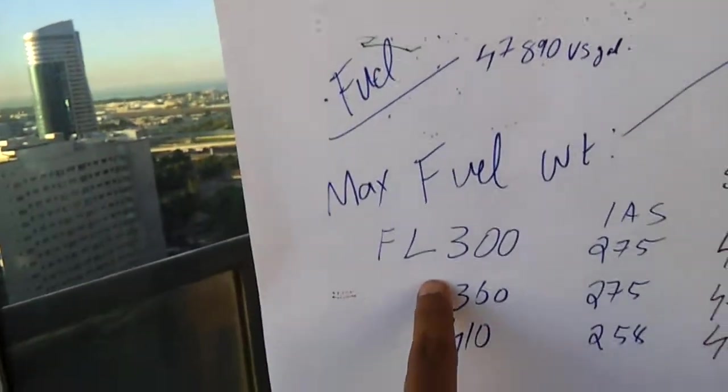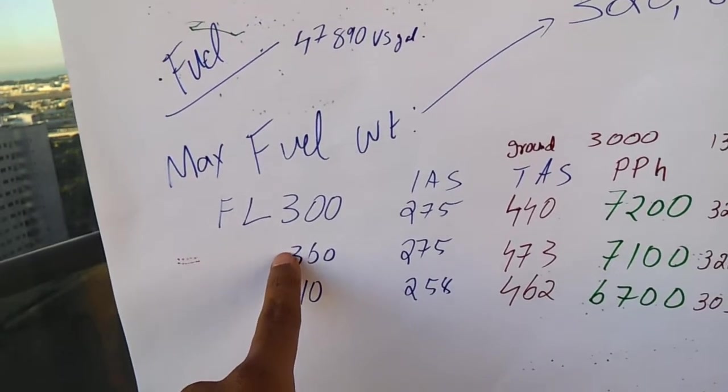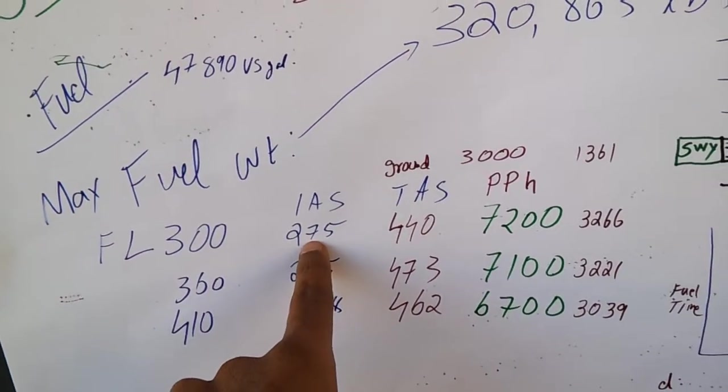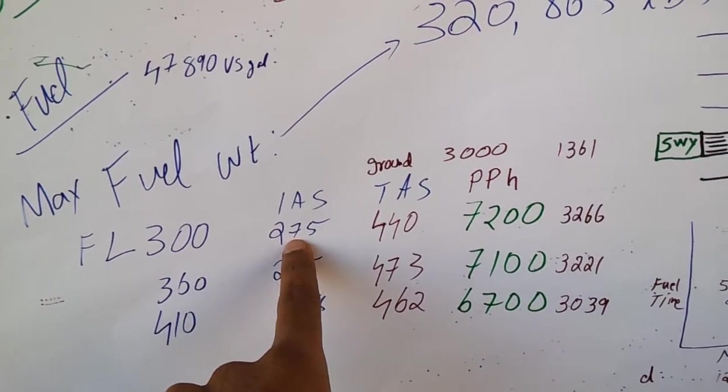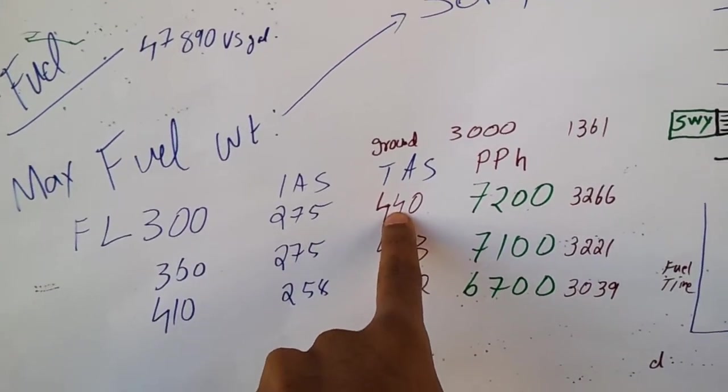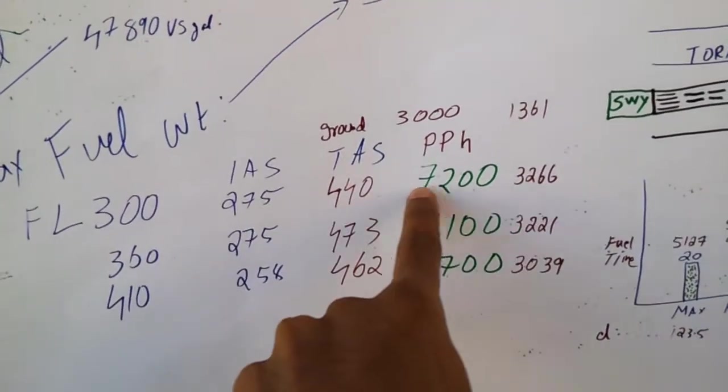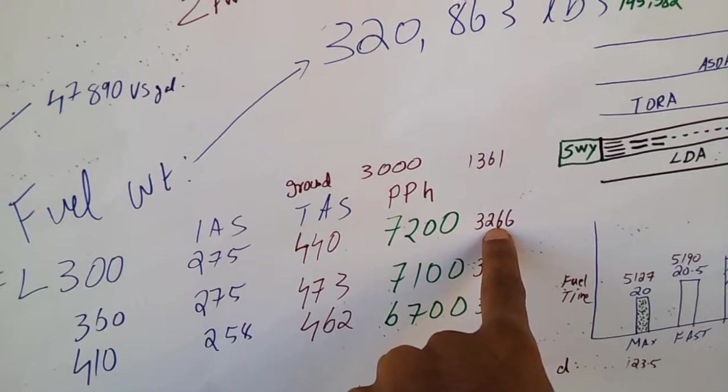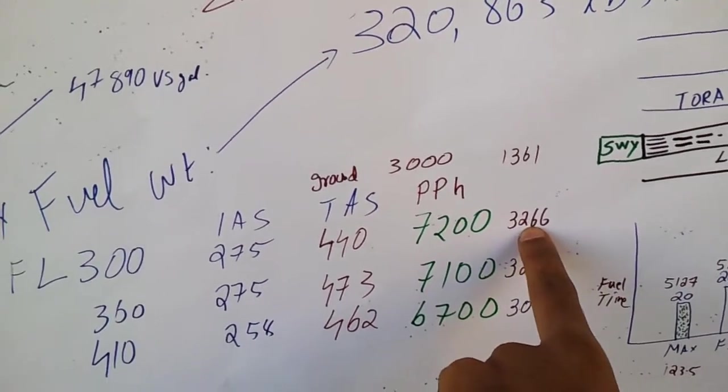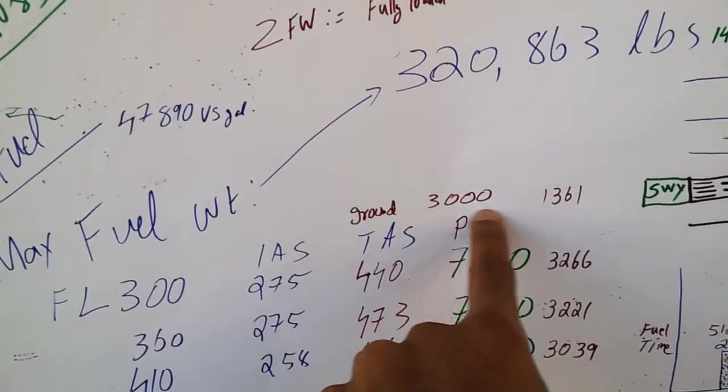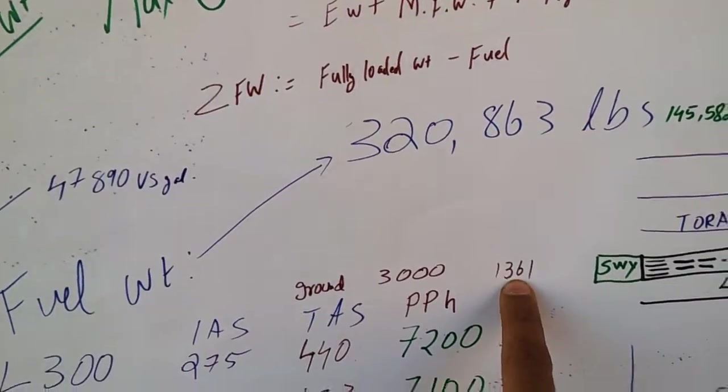For fly level 300, for an IAS 275, you have a true airspeed of 440 and it burns about 3,266 kg per hour. On the ground it burns around 1,361 kg per hour.